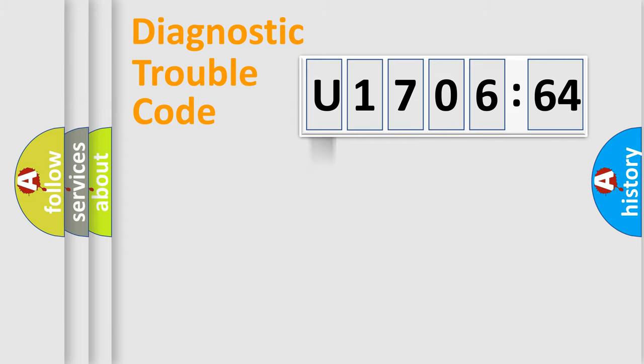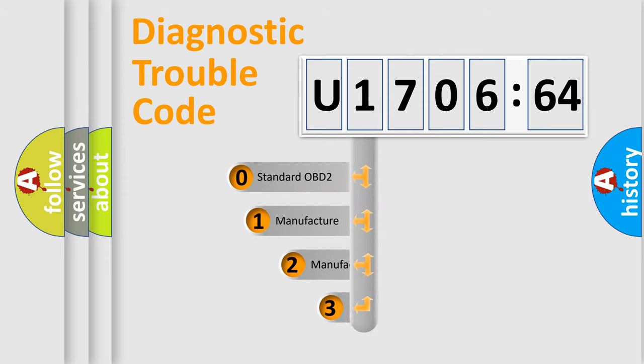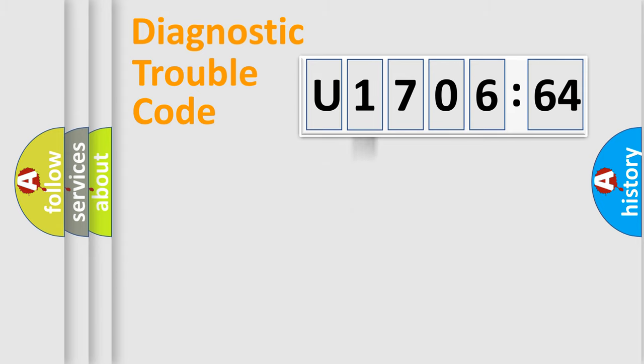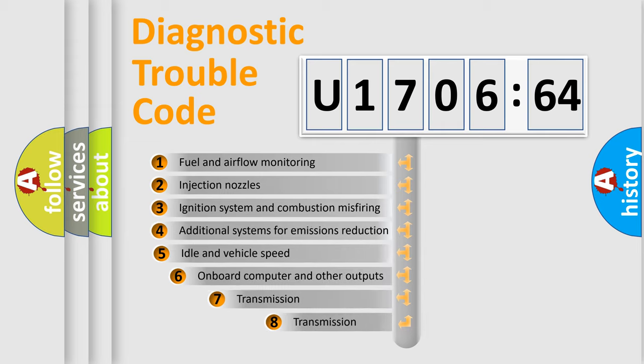Powertrain, Body, Chassis, Network. This distribution is defined in the first character code. If the second character is expressed as zero, it is a standardized error. In the case of numbers 1, 2, 3, it is a more prestigious expression of the car-specific error.